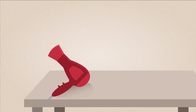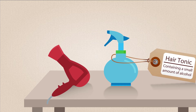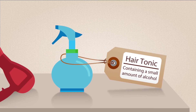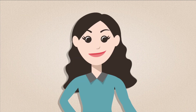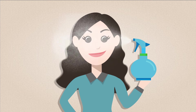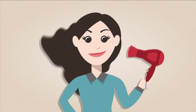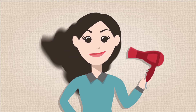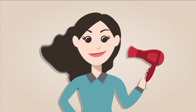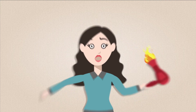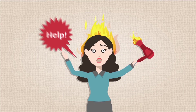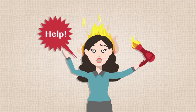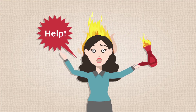When Susan bought the hairdryer from Hair Goods, she also bought some hair tonic to use with it, and this hair tonic contained a small amount of alcohol. Susan first washed her hair, then applied the hair tonic and began to dry her hair. Unfortunately, her hands were still wet at this point in time. Almost immediately, flame started in the hairdryer and Susan's hair caught fire.